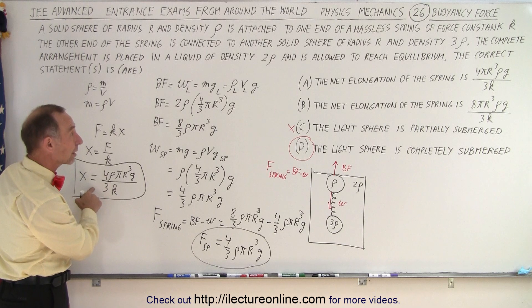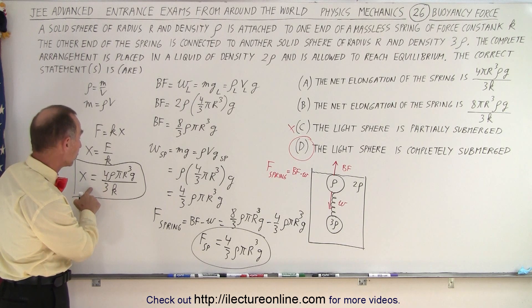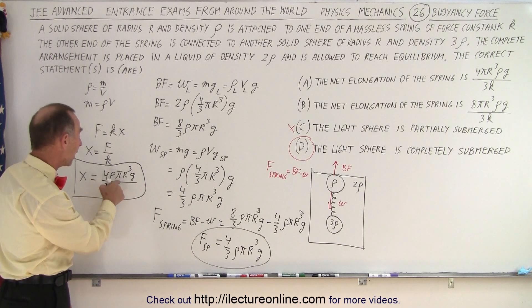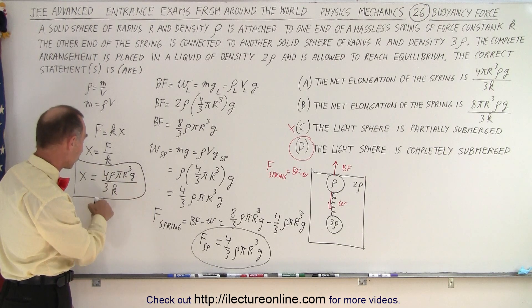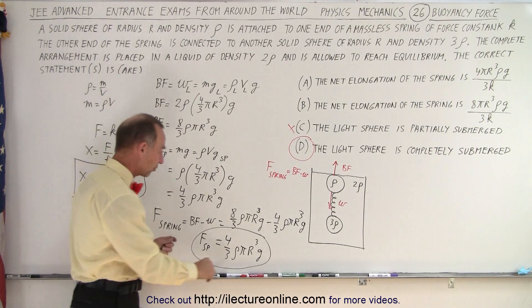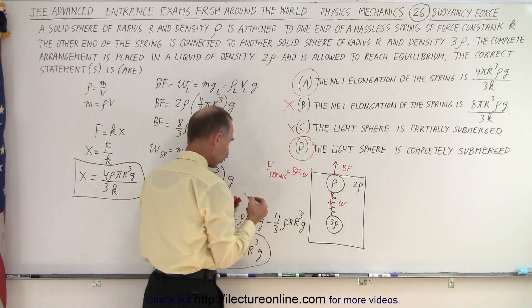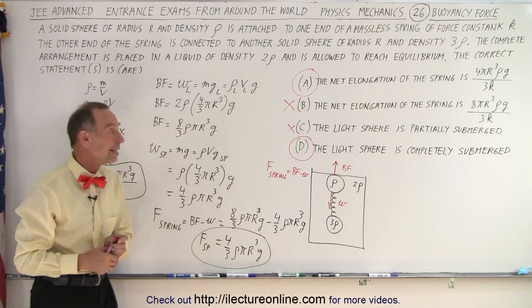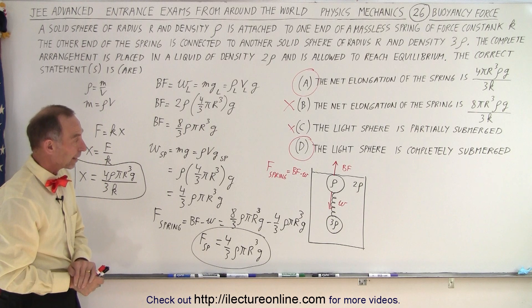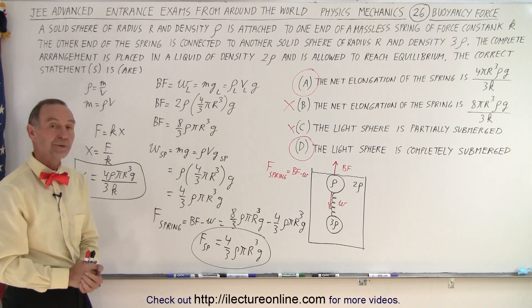It's one of the answers, this one, and looks like it's 4 pi, no, 4 rho pi r cubed g over 3k. So it looks like answer A is correct, and answer B is not. So the two correct answers are A and D, B and C are not correct, and that is how it's done.